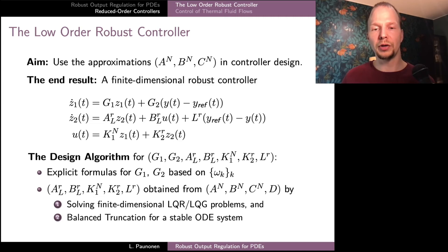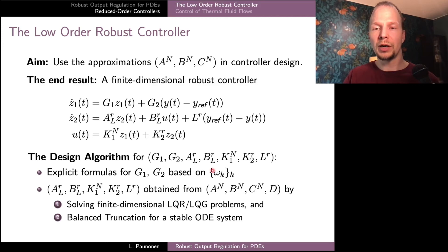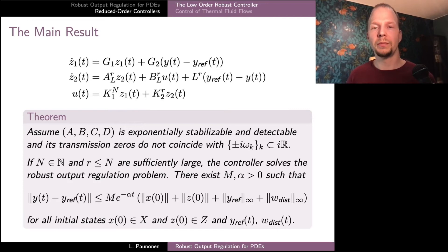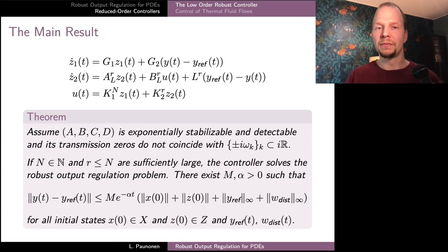When we use this control structure and design algorithm, our main result states that if the order N of the Galerkin approximation and the model reduction dimension parameter are both sufficiently large, then this finite-dimensional controller solves the robust output regulation problem for our original PDE system. In particular, the convergence of the output to the reference signal is exponential with exponent alpha. The uniform exponential decay rate for the tracking error can be designed in the controller design parameter, within the bounds that the shifted system should be both exponentially stabilizable and detectable.